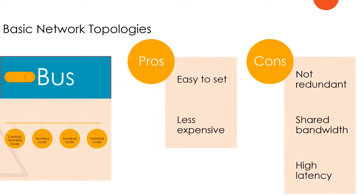The bus topology has all the disadvantages of the ring plus it is non-redundant and has more data collisions inside the channel, resulting in lower bandwidth. However, it has the advantage of being easy to set up and less expensive, making it useful in applications where we don't need high bandwidth or continuous transmission — for example, connecting sensors in different parts of a building that send a signal every period of time.